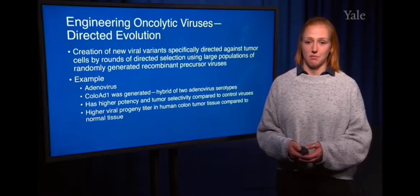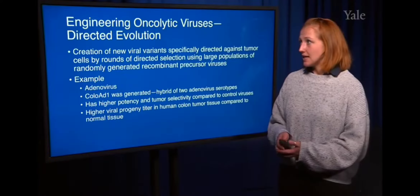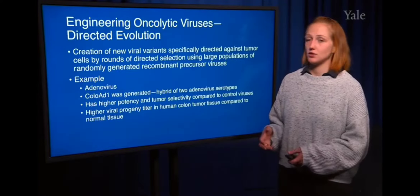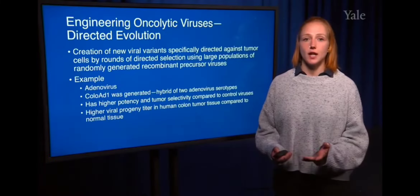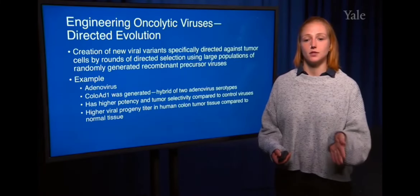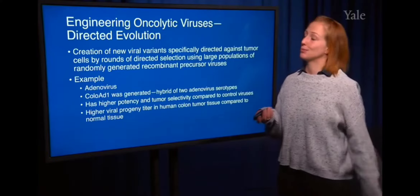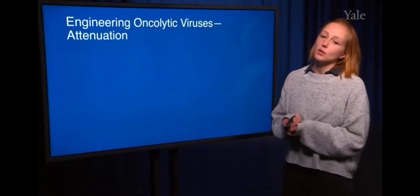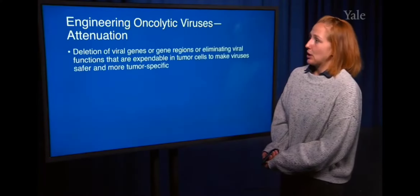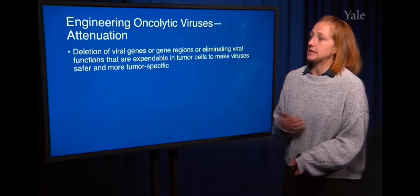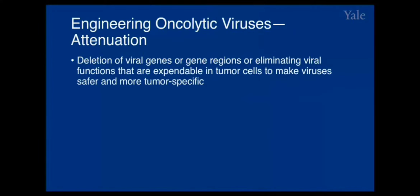Directed evolution is a great way to start, but you can also genetically manipulate viruses to do what you would like them to do. One way of doing this is by attenuating viruses — the deletion of viral genes, gene regions, or eliminating viral functions that are expendable in tumor cells to make viruses safer and more tumor specific.